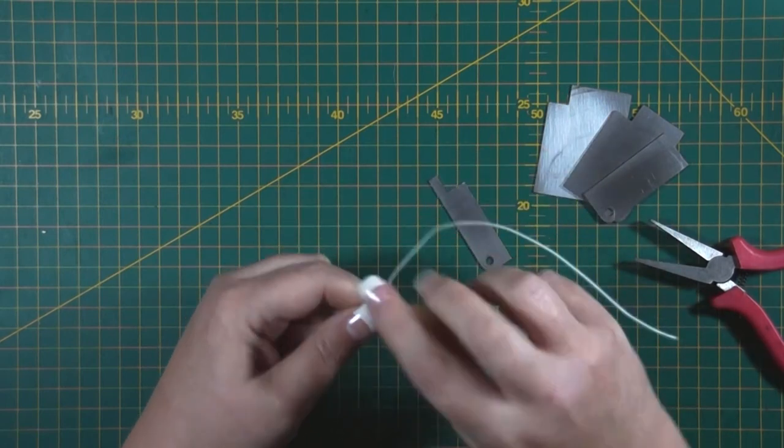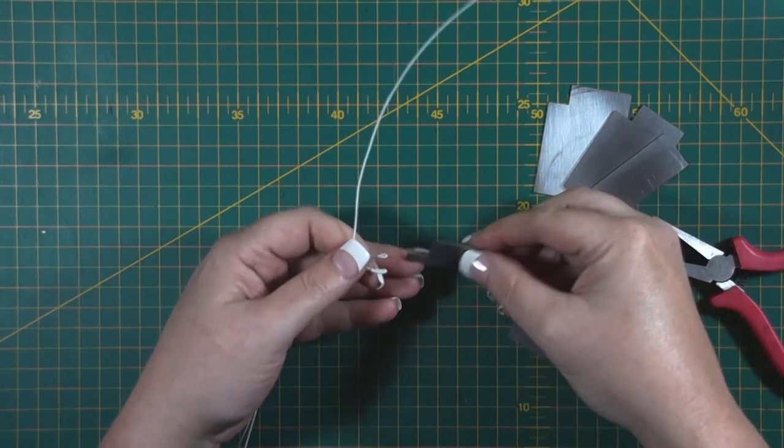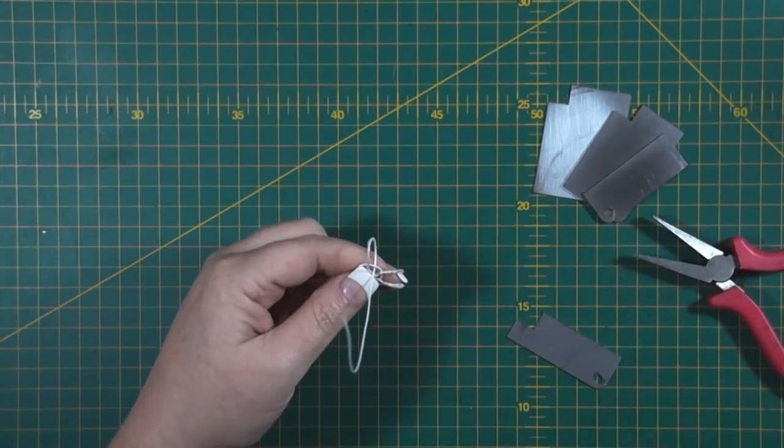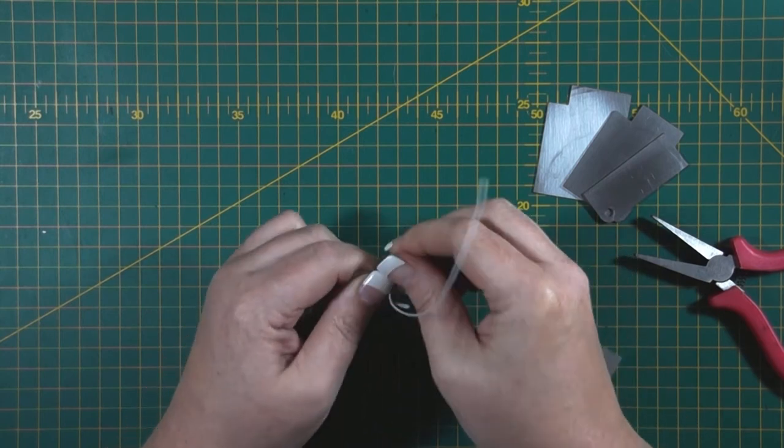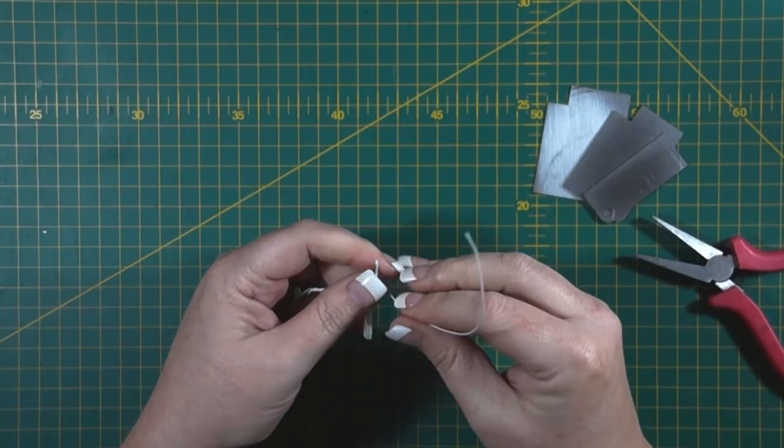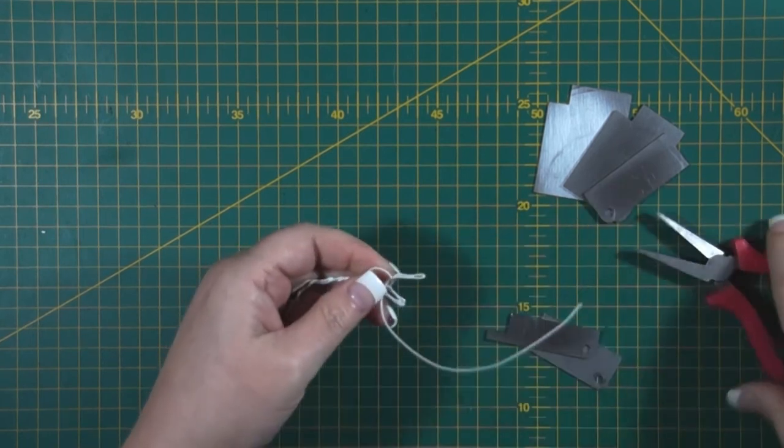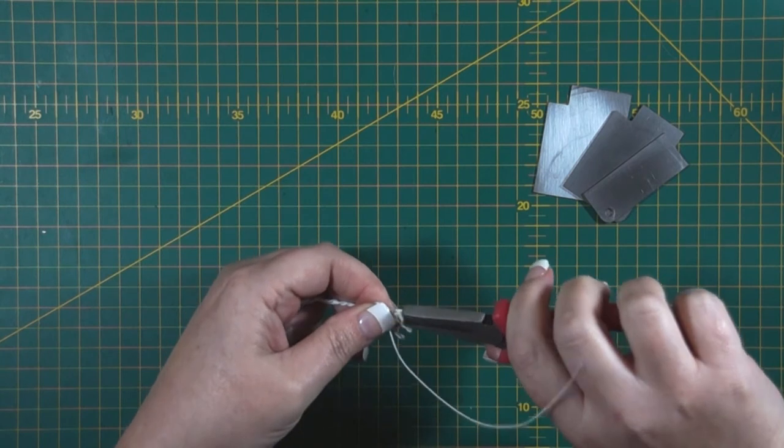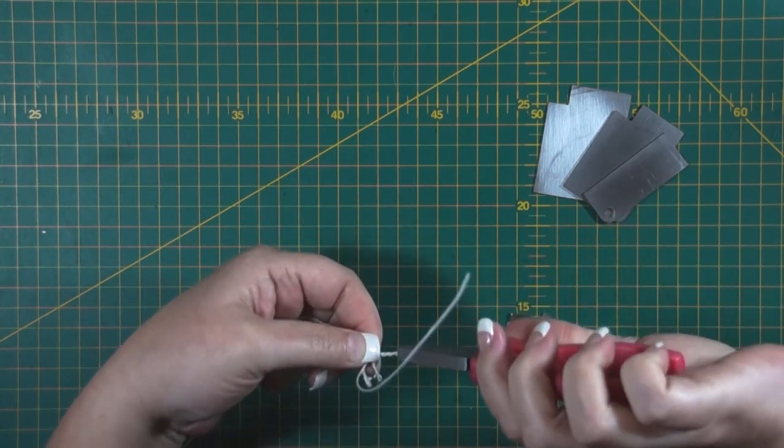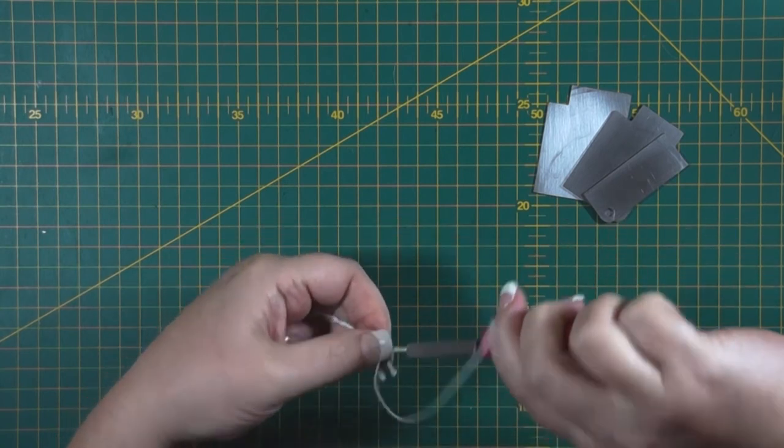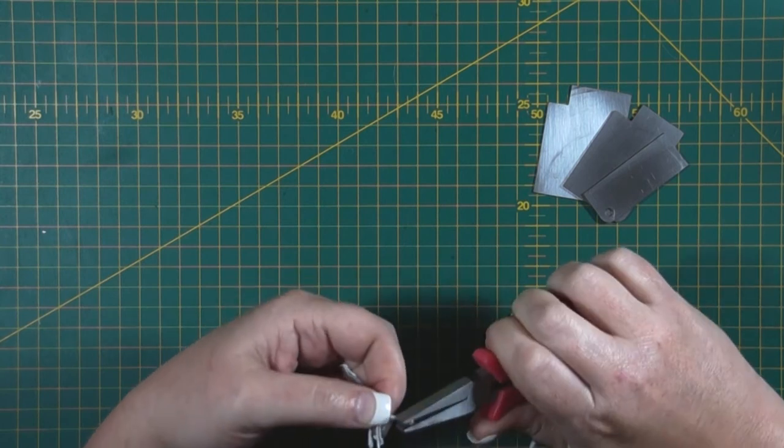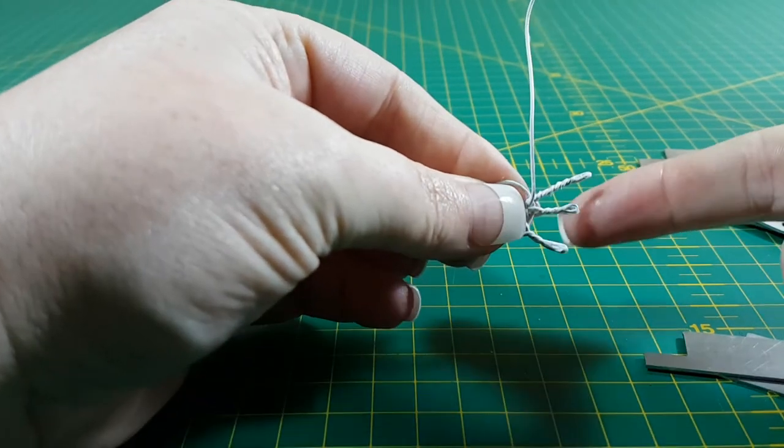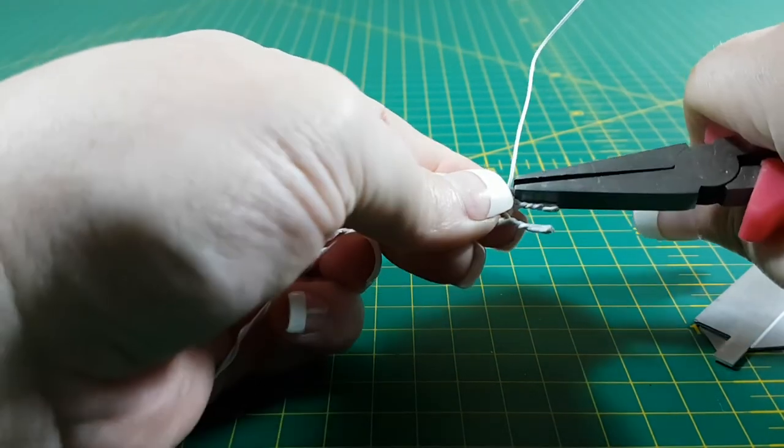So for a middle finger we're going to go a little bit bigger. So for that we're going to go to the 15 mil and create my loop. Create my folding point. And twist it. And you can see how the third or middle finger is longer.